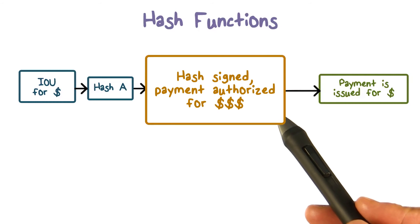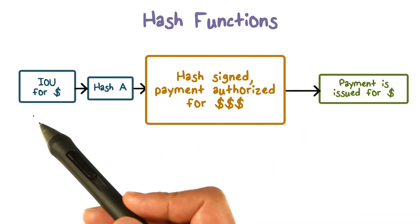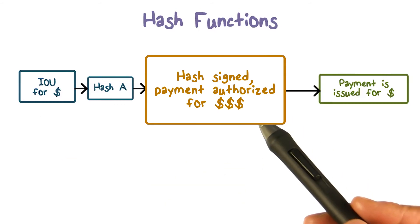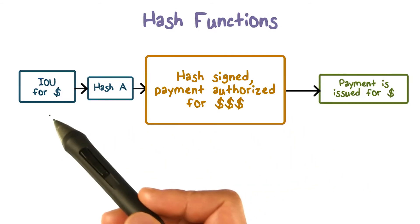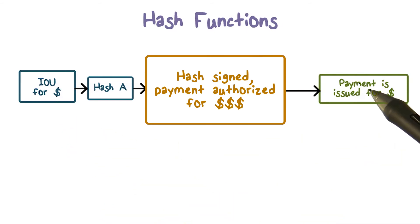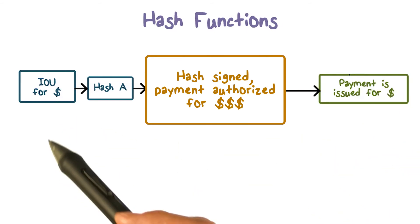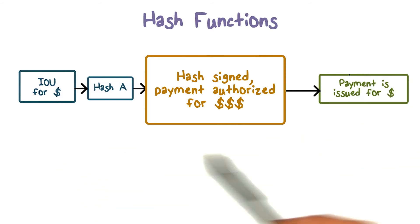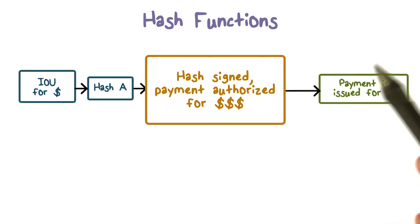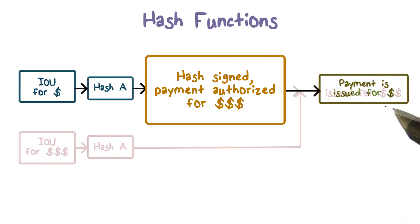This would prove that Alice authorized the IOU message. In other words, Alice will agree to pay this amount later. In a later day, Bob can present this IOU message along with the signature to Alice or Alice's bank to get the money.